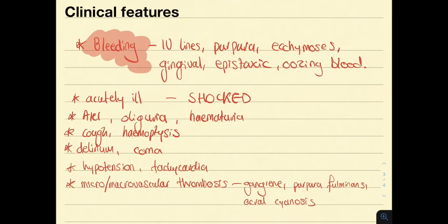Always think of the cause of DIC, as that might elucidate some of the clinical features. If a patient presents with new onset bleeding through their lines, ecchymosis, or purpura, you can think of DIC as a differential. Any pathology resulting from intravascular thrombosis, such as stroke and MI, you can also think of DIC. It is the combination of clinical features with investigations that will give you a definitive diagnosis of DIC.